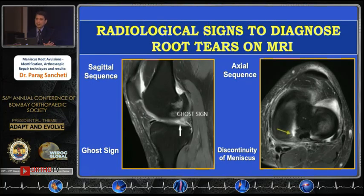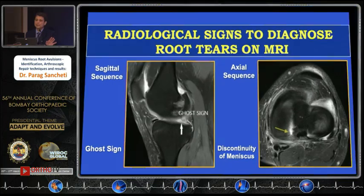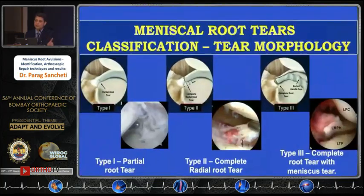So on MRI, tell your radiologist to specifically look for these findings if you have a high level of suspicion. These cuts and sequences should always be included by the radiologist, because once you know that there is a tear, you are better prepared to handle it intraoperatively rather than just diagnosing it by accident.